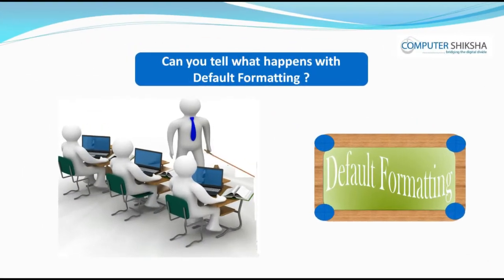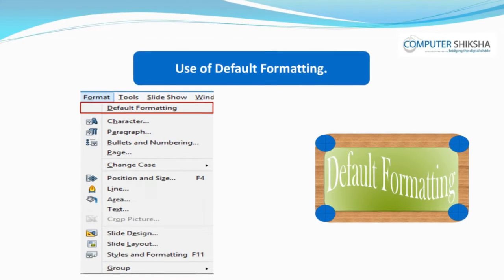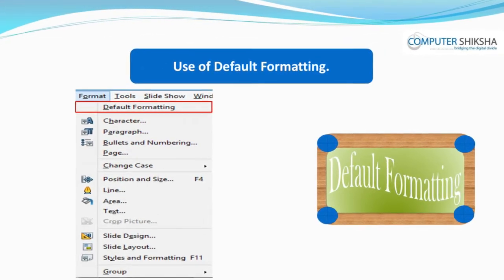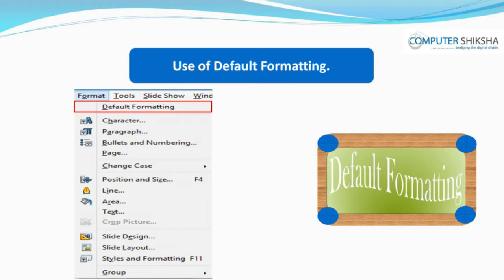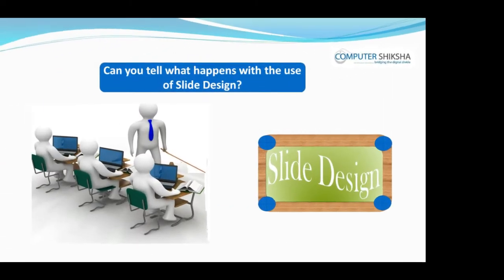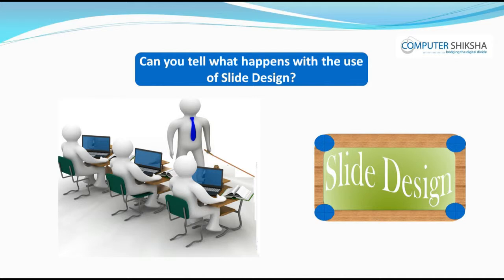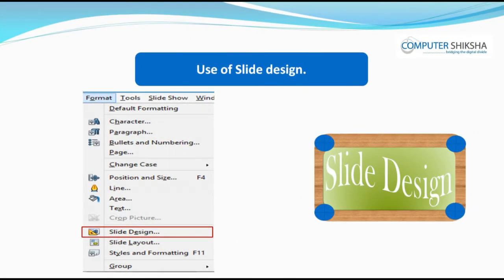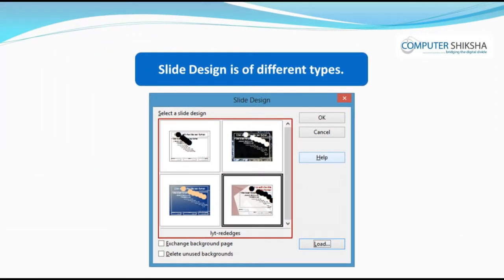Can you tell what happens with default formatting? Default formatting is an option using which you can remove any formatting done on a line or paragraph and bring it back to its original form. Can you tell what happens with the use of slide design? With slide design, you can change the design of a slide — your normal slide will change to a different format. Slide design is of different types.